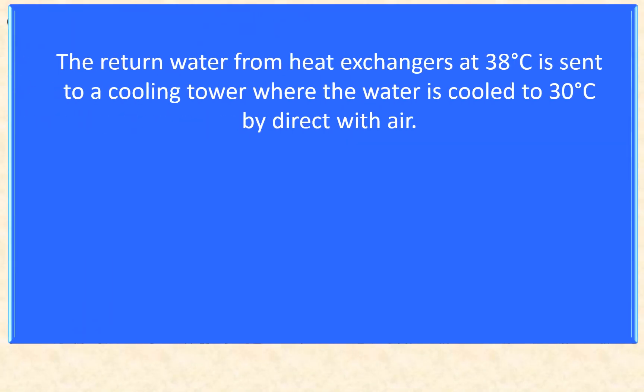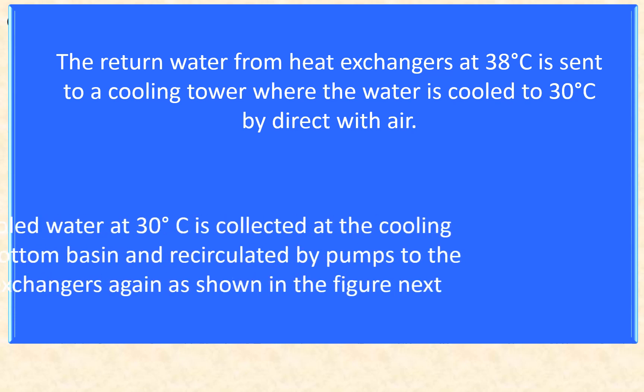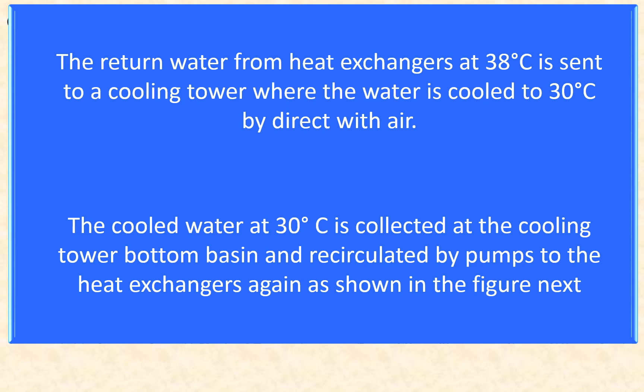The return water from the heat exchangers at 38°C is sent to the cooling tower, where the water is cooled to 30°C by direct contact with air. The cooled water at 30°C is collected at the cooling tower bottom basin and recirculated by pumps to the heat exchangers again.